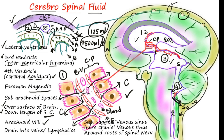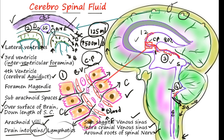The arachnoid villi facilitate the drainage of the CSF — draining into the veins (the majority) and a minimal amount into the lymphatics. The main drainage goes into the superior sagittal venous sinus and intracranial venous sinuses, and around the roots of the spinal nerves in the case of the spinal cord.